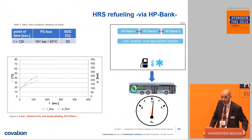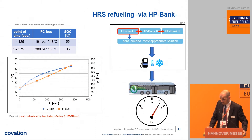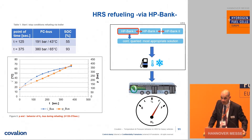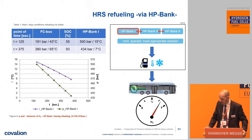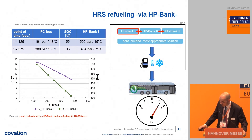We now switch to HP bank one, as this is the next most efficient way. The software indicates we need HP bank number one, we open the valves, and the refueling continues. We reach a stop criterion again — temperature, pressure, or mass flow. After 375 seconds we reached 380 bar at 65 degrees, and we have not yet reached the 95% SOC target, but we are almost there at 93%. You can see clearly the temperature behavior in the bus during refueling. The behavior in pressure bank one is inverse to the pressure behavior in the fuel cell bus — we see a temperature drop from 15 degrees down to 7 degrees, and from 500 bar down to 434 bar.